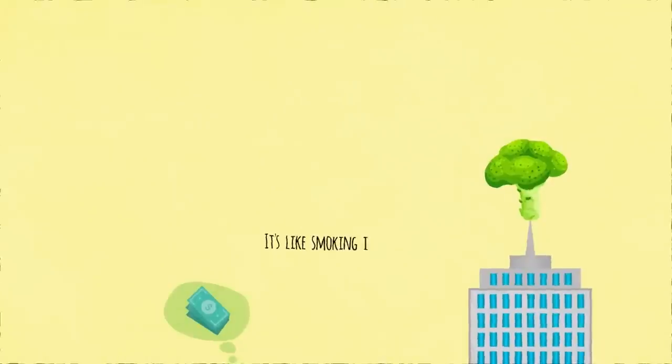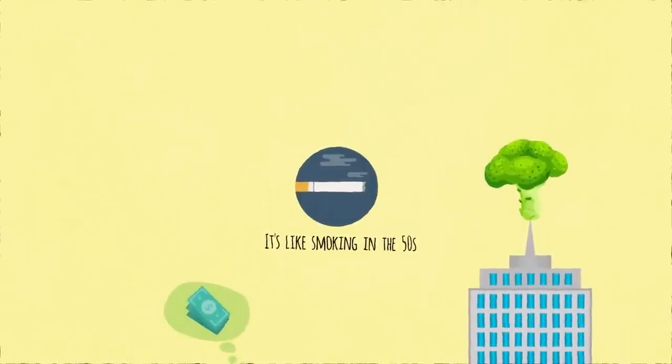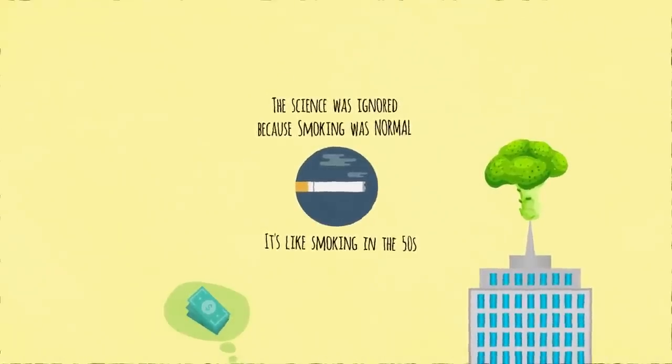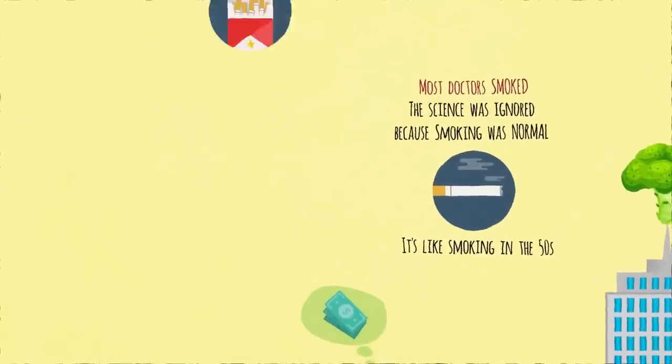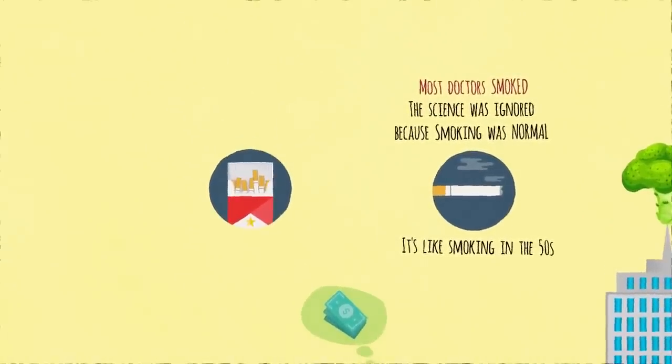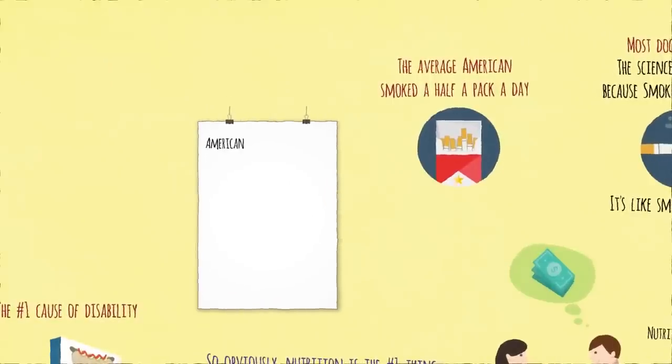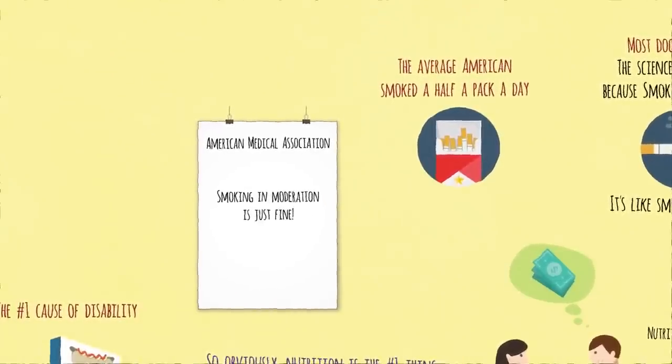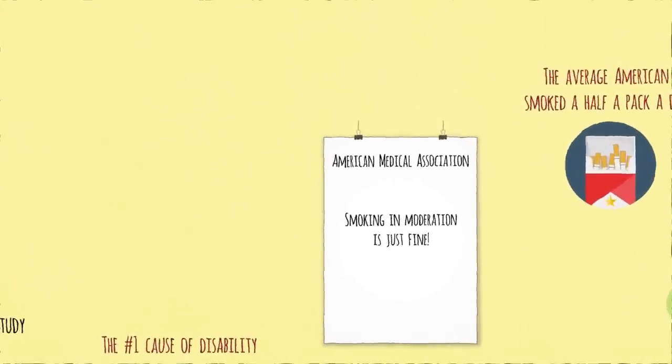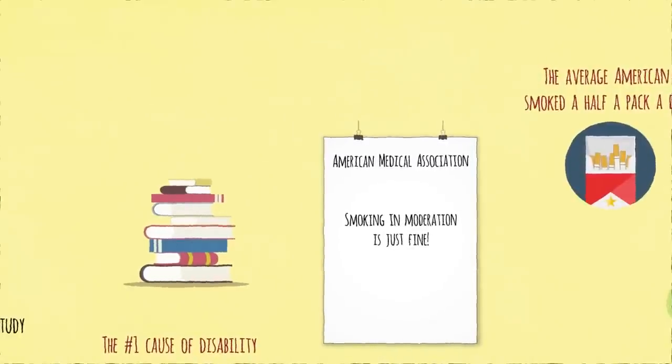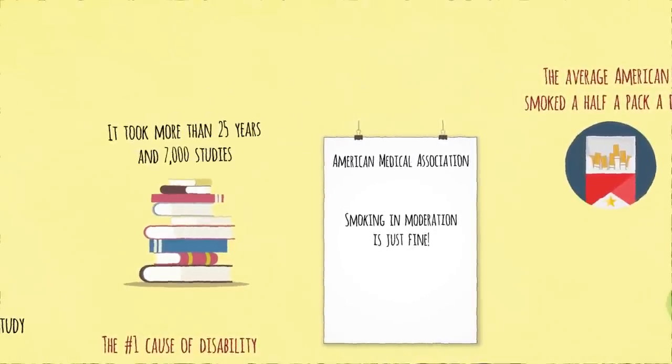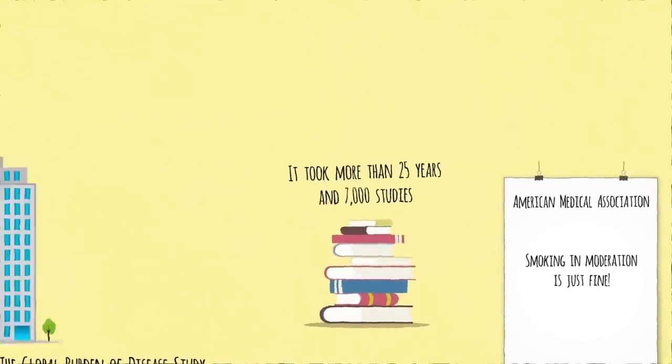It's like smoking in the 50s. We already had decades of science linking smoking with lung cancer, but it was largely ignored because smoking was normal. Most doctors smoked. The average per capita cigarette consumption was 4,000 cigarettes a year, meaning the average American smoked a half-pack a day. The American Medical Association was reassuring everyone that smoking in moderation was just fine. There was the same disconnect between the science and public policy. It took more than 25 years and 7,000 studies before the first Surgeon General report against smoking came out in the 60s. You'd think maybe after the first 6,000 studies, they could have given people a little heads up or something. Powerful industry.